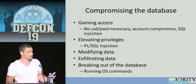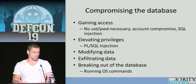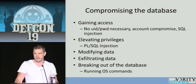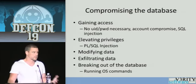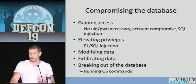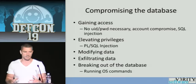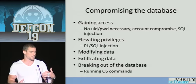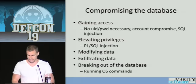Getting to the good stuff: compromising the database. In a typical database compromise there are several stages. First, there's gaining access. Once they've managed to gain access, they need to elevate privileges if they want full control. Once they've got the requisite privileges, they might want to modify data, exfiltrate data. And thereafter, they might want to use the database server as a staging platform to attack the rest of the network — breaking out the database to run operating system commands and download their toolkits.